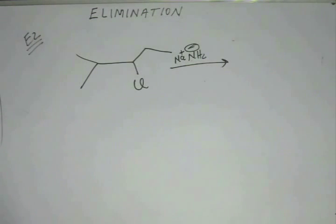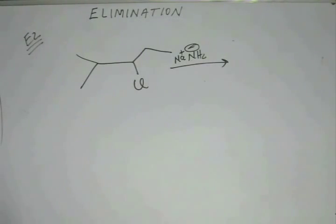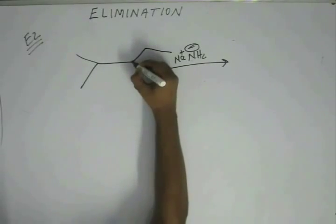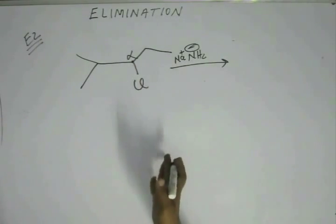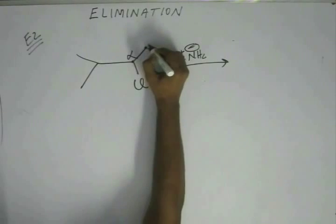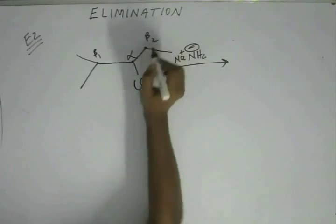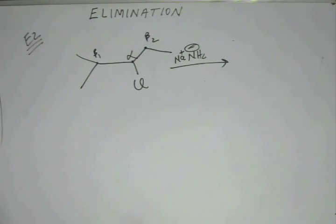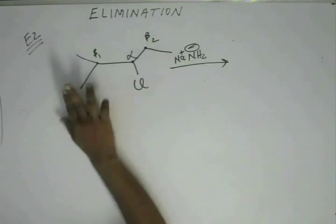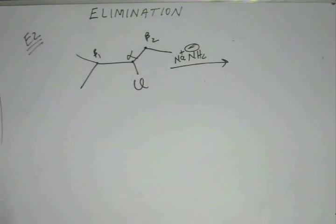N₃²⁻, as we have seen in base versus nucleophile, acts as a base. Since it is the base, there will be an elimination reaction and you have to decide upon the major product. There are two beta carbons. The carbon directly attached to the leaving group is the alpha carbon, and the carbons attached to the alpha carbon are beta carbons — beta 1 and beta 2. If you have elimination from beta 2, the pi bond will form at that position; if from beta 1, the pi bond forms at that position.